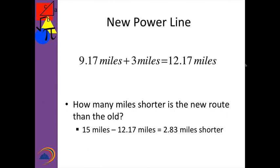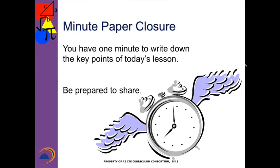Welcome back. The new power line would be 9.17 miles plus 3 miles, so it's 12.17 miles long. How much shorter is it? Subtracting: 15.00 minus 12.17 gives 2.83 miles shorter. There are lots of applications for the Pythagorean theorem in construction — it's one of the most useful things in math that you'll use. Now take one minute to write down the key points of today's lesson, share with your partner, and teacher call on non-volunteers. I'll meet you back here for another construction math lesson. Thank you.